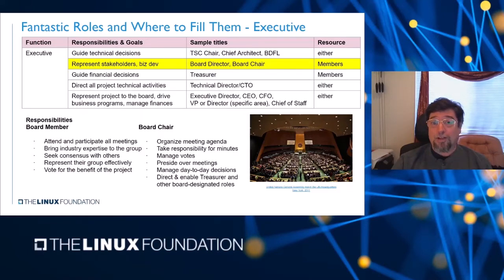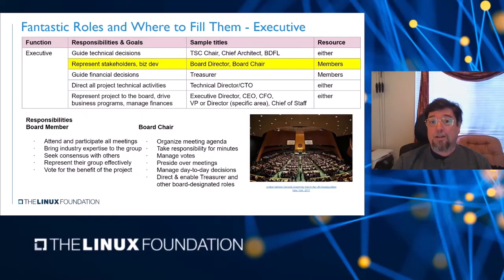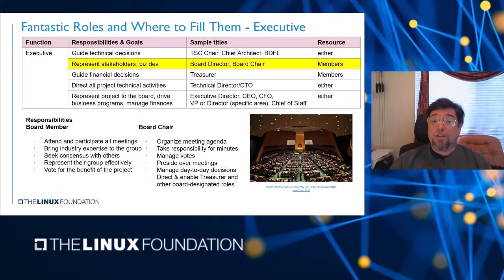Board members are expected to represent their group effectively, whether it's a company or another group of members, and to balance the needs of their group with the needs of the project, voting appropriately for the benefit of the project. The board chair has additional expectations, usually outlined in the charter. These often include organizing the agenda for each meeting, distributing the minutes prior to each meeting, directing the board secretary on what should be kept in the minutes, holding operational and strategic votes, presiding over meetings as a first among equals and guide for discussion, managing day-to-day operational decisions, and ensuring that the treasurer and other chartered roles get the resources they need and report back to the board.